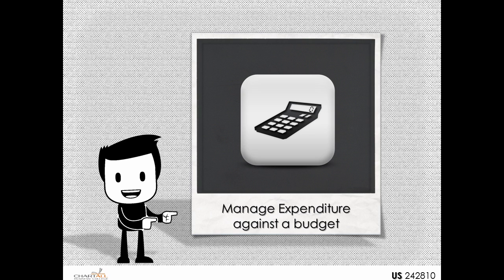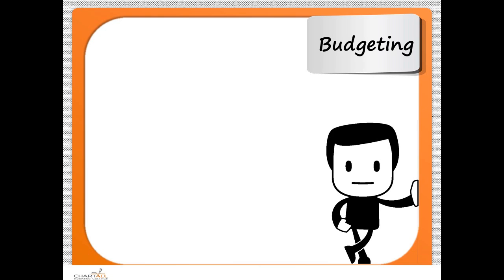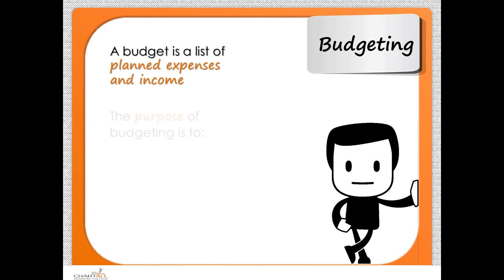No business can survive without financial resources because there is scarce commodity. Therefore, we need to have a plan so that these resources are judiciously used. Some of the outcomes that need to be achieved is that we need to have a thorough understanding of concepts of budgeting and the different methods that can be applied. We need to understand what steps need to be followed if we are going to manage our expenditure against our budget. How does the company budget affect you in your role or in your department or business unit?